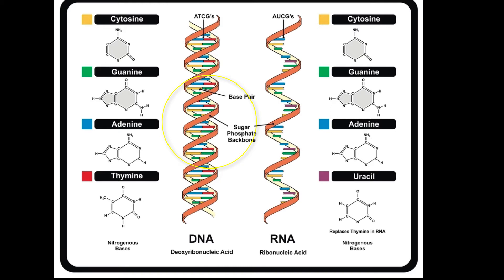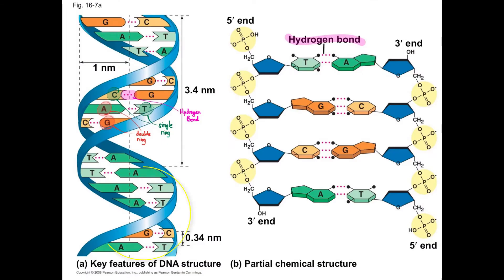The sides of the staircase are composed of the deoxyribose and the phosphate groups. Each step of the spiral staircase is made of two nitrogenous bases. Adenine pairs with thymine, and cytosine pairs with guanine.